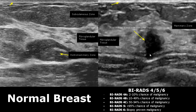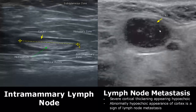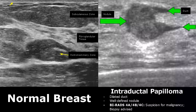Usually hypoechoic masses with irregular walls or a spiculated appearance are malignant, and they have a taller than wide orientation. Here we have a case of lymph node metastasis — comparing it with a non-malignant lymph node, the cortex is very thick giving it an abnormally hypoechoic appearance, which is usually a sign of malignancy. Intraductal papilloma is not very common; its appearance involves dilated ducts and a well-defined nodule. It is rated BIRADS 4 and biopsy is advised.